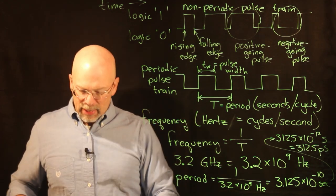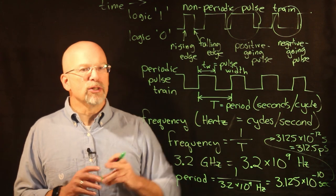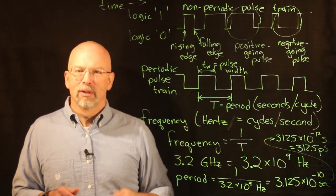What we're going to move on to next time is we're going to talk about how these pulse trains can be used to dim an LED.